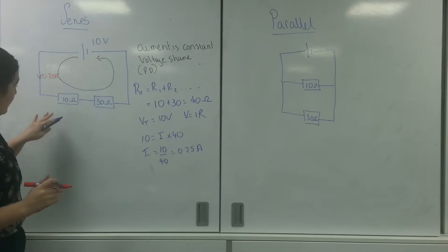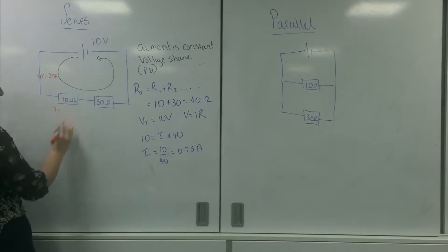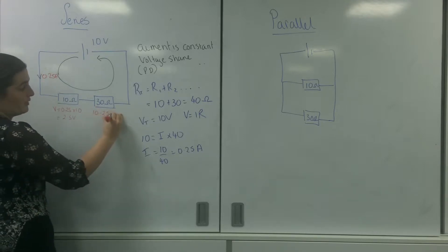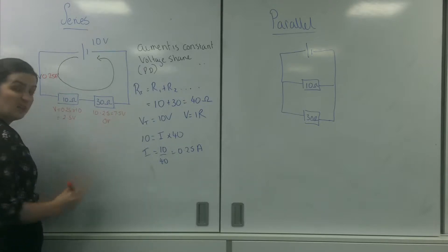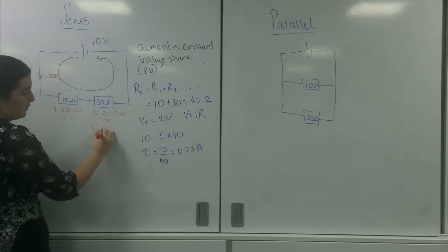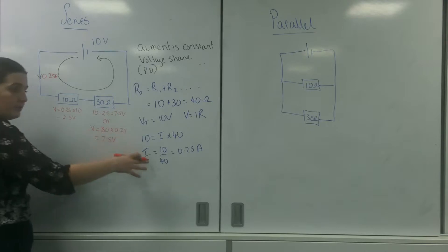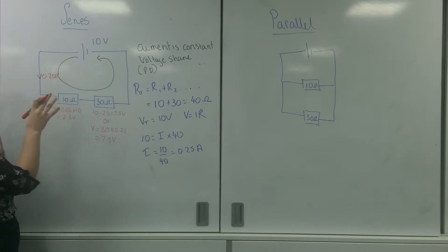So to work it out, this 10 ohm resistor has this much current going through it. So potential is 0.25 times 10 which is 2.5 volts. Now to find the potential in this one I could use two different things. I could use Kirchhoff's voltage law and go 10 minus 2.5 is 7.5 volts. Or I could use Ohm's law again and have V equals 30 times 0.25 which also equals 7.5 volts. So this is using Ohm's law and using Kirchhoff's voltage law. You're welcome to use either method.